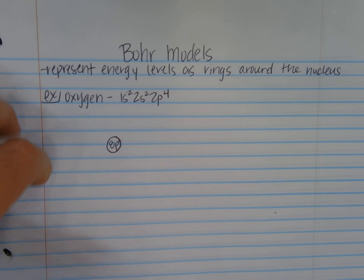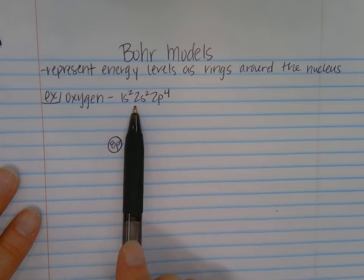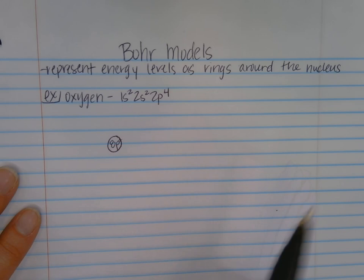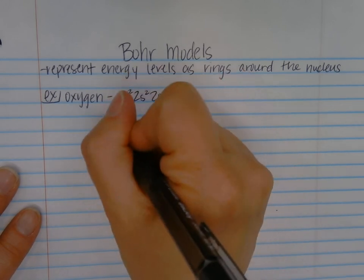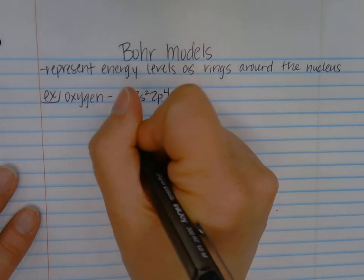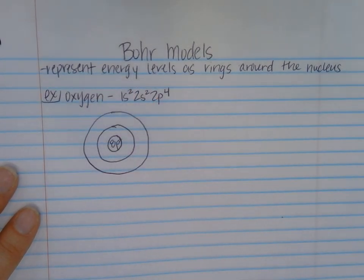Looking at this electron configuration, the energy levels tell us how many rings to draw. The 1 is the first energy level. The 2s and 2p, even though they're different orbitals, are on the same energy level. So this tells me that I have two energy levels to draw — one, two — and I'm just going to draw these as rings around my nucleus.